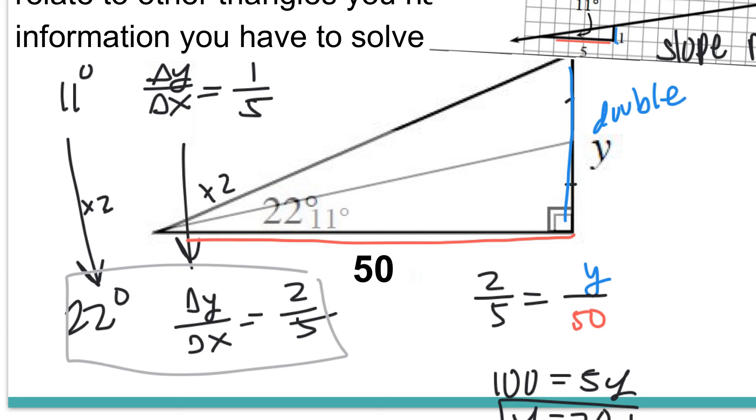Now that I kind of pulled this part aside, I can do this part over here. Because I know that this triangle was 22 degrees, then the slope ratio must be 2 over 5. And in this case, 2 over 5 equals Y over 50.